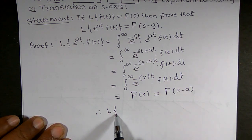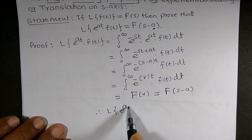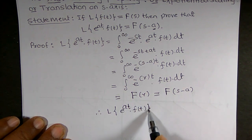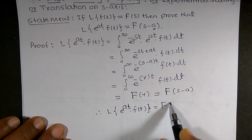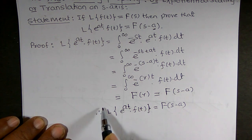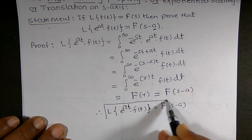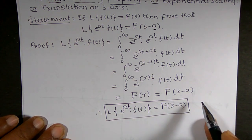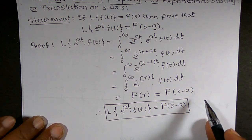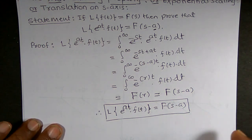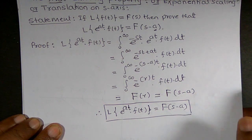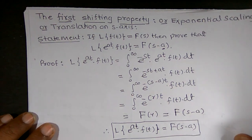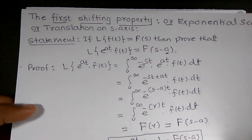Therefore, it can be written as: L{e^(at)·f(t)} = F(s - a). This property is called the first shifting property of the Laplace transform. So why don't we verify this property by using a particular function?